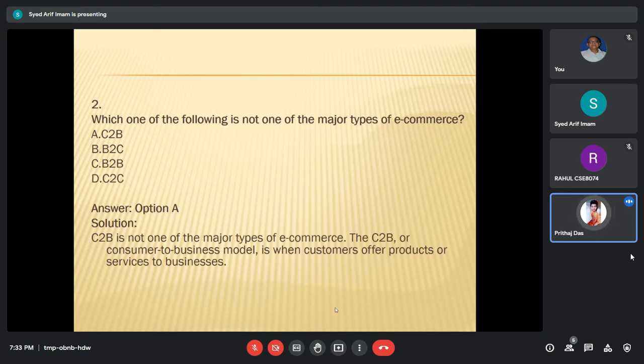In the C2B model, the exact reversal of B2C model is being followed. While the B2C model is service to the company by a business, the C2B model provides the end consumers with the opportunity to sell their products or services to companies.